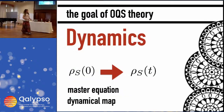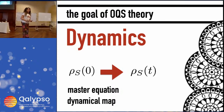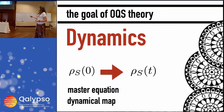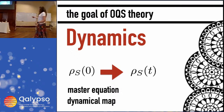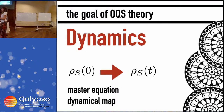The main goal of open quantum system theory is to predict the dynamics of an open system — given a certain initial state, studying how it evolves in time. This is done by the two key tools I call the queen and the king of open quantum system theory: the dynamical map and the master equation. Both are used to describe dynamics and they are obviously related.